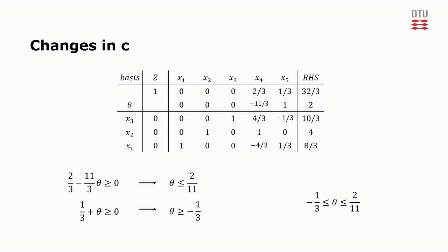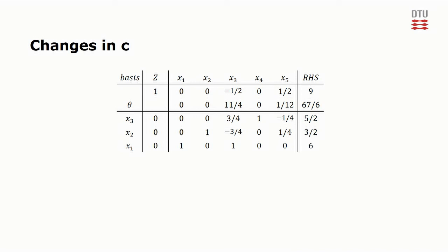Doing that gives us this tableau which is optimal when theta satisfies these inequalities, i.e. when theta is more than 2 elevenths. We can now write the complete set of optimal objective values for non-negative values of theta as this. This concludes the analysis.